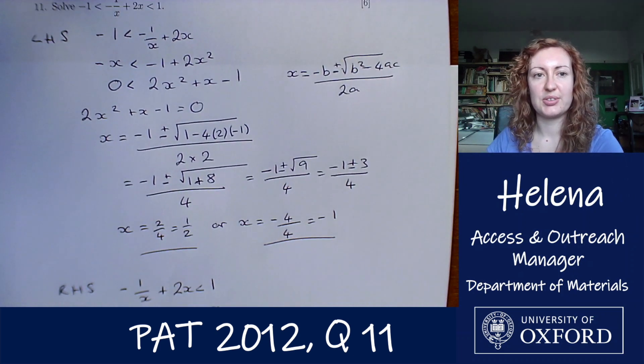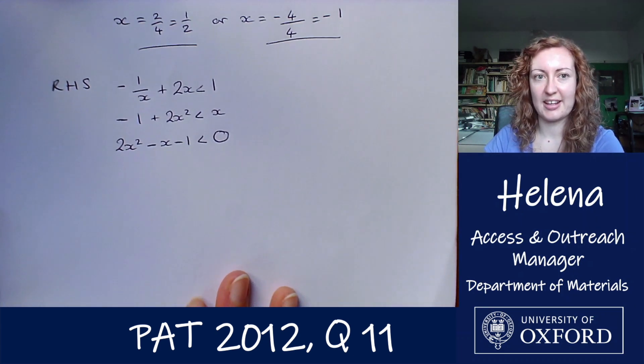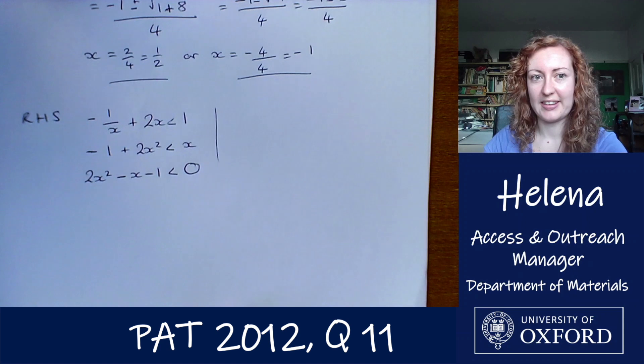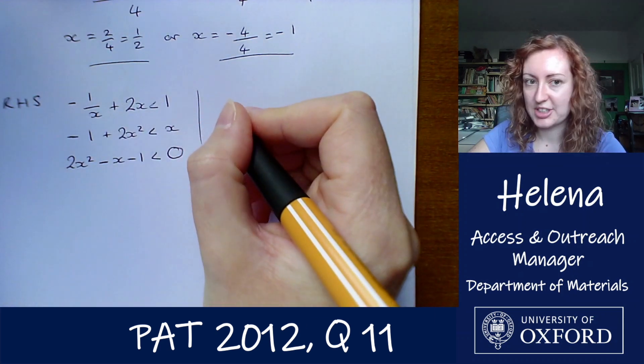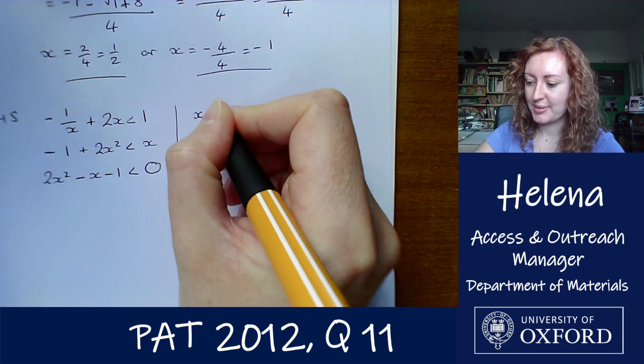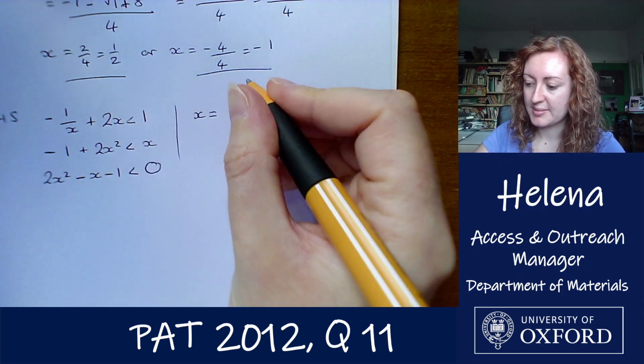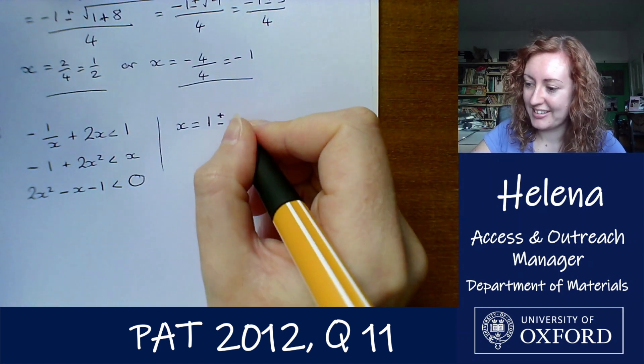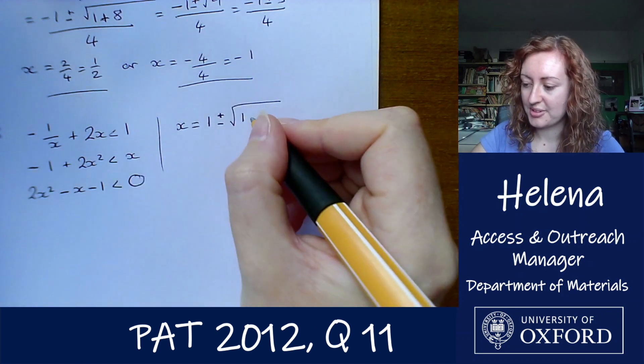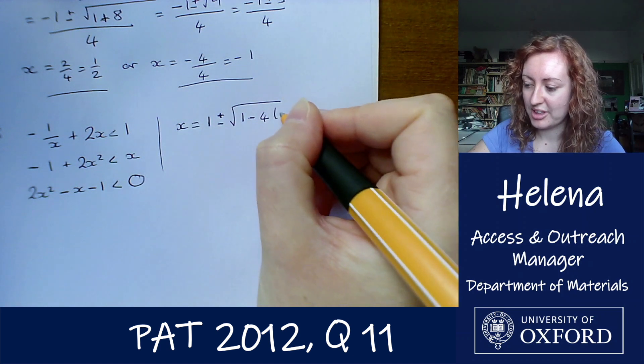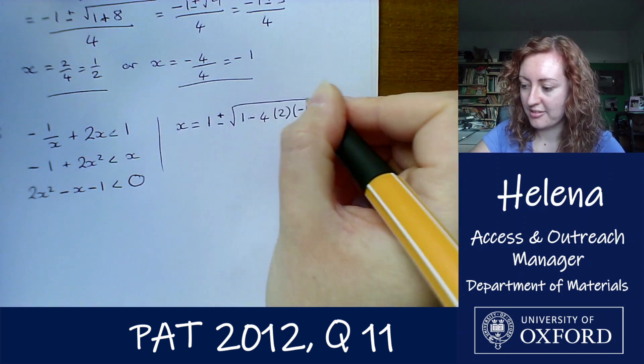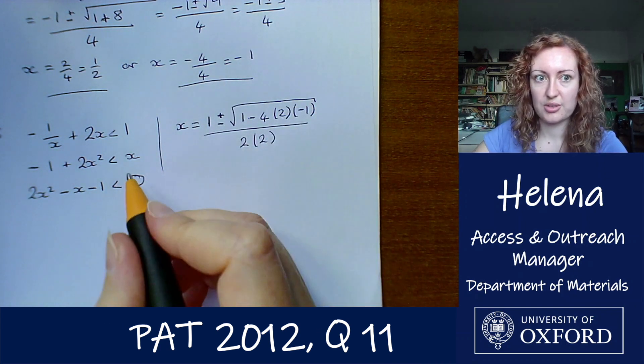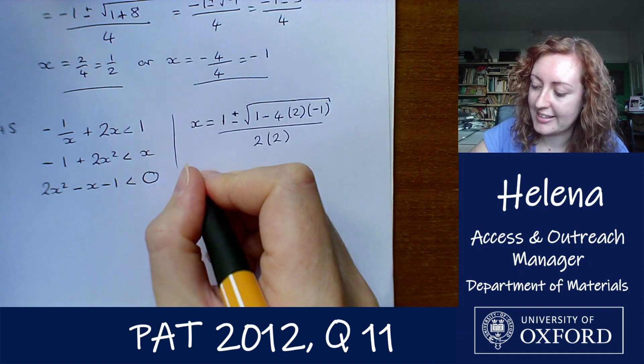So we have that 2x squared minus x minus 1 is less than 0. So it's very similar to the one above, we've just got a slight change in sign here. And again let's find the roots using the quadratic formula. So x equals minus b, well b is minus 1, so we have 1 here, plus or minus the square root of 1 squared which is 1 minus 4 times 2 times minus 1.